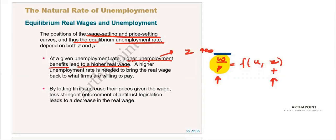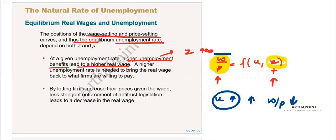If the real wage increases and I want to keep the real wage unchanged, I will simultaneously increase the unemployment rate. The moment the unemployment rate increases, there will be more competition and the real wage will fall. So an increase in z, which causes real wage to rise, must be compensated with an increase in u, which causes the real wage to decrease.